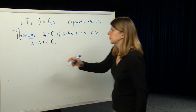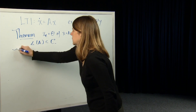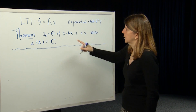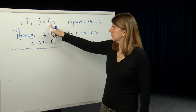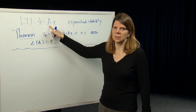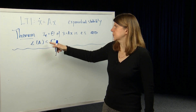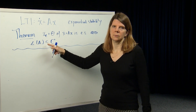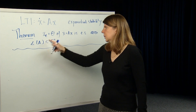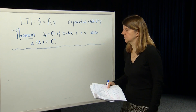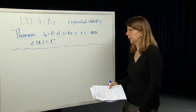So let's prove this. It's a very nice test because typically you're given the A matrix, it's not too hard to calculate its eigenvalues, and so just by looking at where its eigenvalues are, you can ask whether or not that system is exponentially stable.